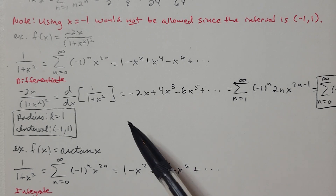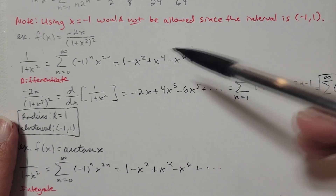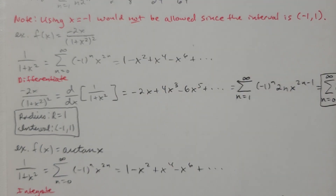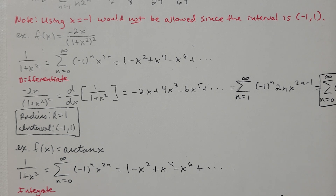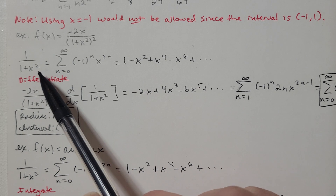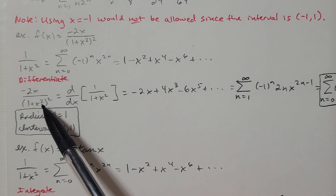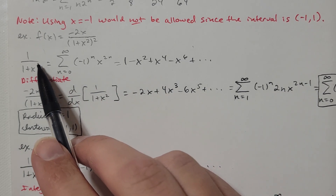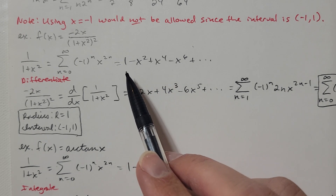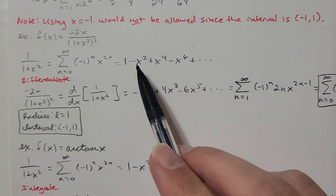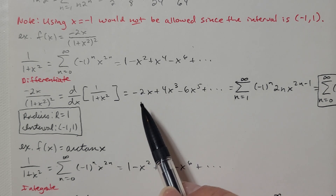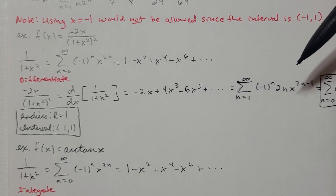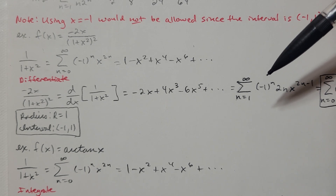I'm going to use that series and differentiate. When I take the derivative of 1/(1+x²), I get the bottom times the derivative of the top (which is 0) minus the top times the derivative of the bottom, that's -2x, all over the denominator squared. Here's the expanded form of the original series, and differentiating each term: the derivative of 1 is 0, the derivative of -x² is -2x, the derivative of x⁴ is 4x³, then -6x⁵, and so on.